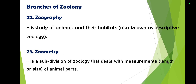Zoology itself — also known as descriptive zoology — is the study of animals and their habitats, specifically animals living in their particular area or place. Zoometry is a subdivision of zoology dealing with the measurement of animal parts — covering meters, length, and size — combining geometry and zoology.